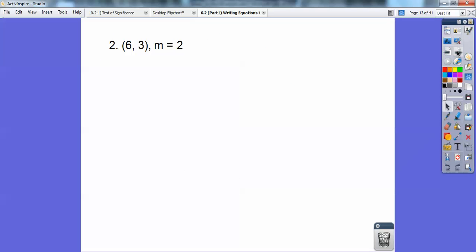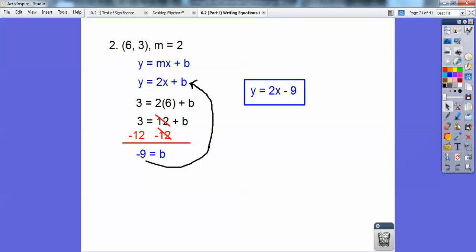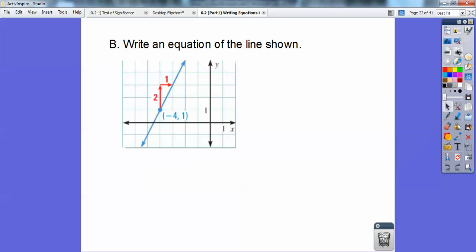So it's going through 6, 3, and the slope is 2. Y equals mx plus b, so it's going to be y equals 2x plus b. You're going to substitute 6, 3 in for the x and y. Then 2 times 6 is 12. You're going to subtract 12 from both sides, and you get negative 9. Don't forget, it has to go back in right there. So the final answer is y equals 2x minus 9.